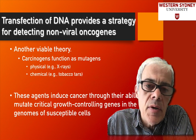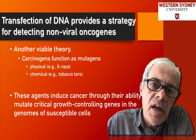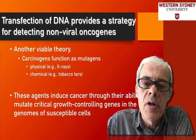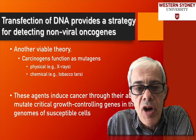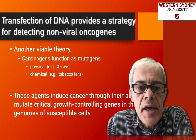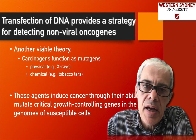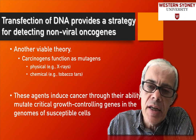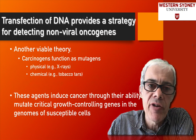So let's return to our narrative. I'm a 1970s scientist trying to understand how tumours occur and what's driving tumour formation. What were some of the key experiments that really established that tumours are caused by cellular genes that have been mutated, rather than viral infections?